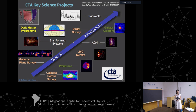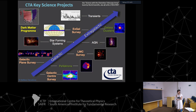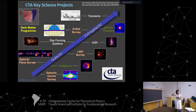A supernova remnant is the product of when a massive star ends its life - it explodes, ejects its outer envelopes producing a spherical shock front that propagates into the interstellar medium. This shock front is a site for cosmic ray acceleration and therefore gamma-ray production. What remains in the core is a neutron star. These neutron stars, in the beginning of their life, spin very fast and produce pulsars. These pulsars emit relativistic winds - pulsar wind nebulae - which are also appropriate for particle acceleration and are also gamma-ray emitters.